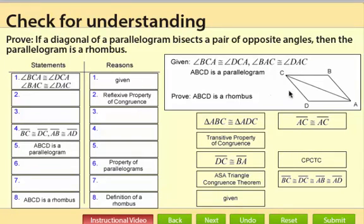Our strategy here is going to be to prove the two triangles are congruent and then eventually we can prove that we have a rhombus.